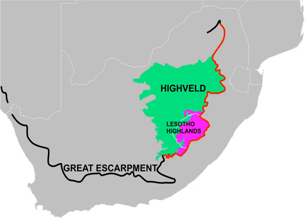The latter mountainous region is, however, not generally referred to as Heiveld, whose boundary at this point runs just inside the Lesotho-Free State border, at about 2,000 m. From its eastern boundary, the Heiveld slopes gently downwards to be bounded by the Great Karoo to the south, the Kalahari Desert to the west, the Bushveld to the north, the Mpumalanga-Lowveld to the northeast, KwaZulu-Natal to the east, and the Lesotho Highlands, or mountains, to the southeast.